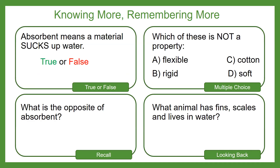Question two, our multiple choice question: which of these is not a property? Flexible, rigid, cotton, or soft?